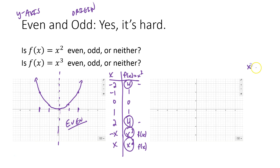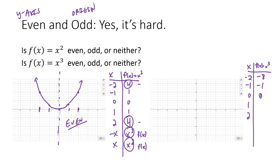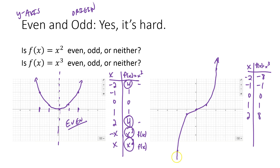Let's try it with x³. We have x and f(x) = x³. Same values: negative 2, negative 1, 0, 1, 2. Negative 2 cubed is negative 8, negative 1 cubed is negative 1, then 0, 1, and 8. Plotting those points: negative 2 is way down, negative 1 is right here at negative 1, 0 at 0, 1 at 1, and 2 at 8. So there is our cubic function.